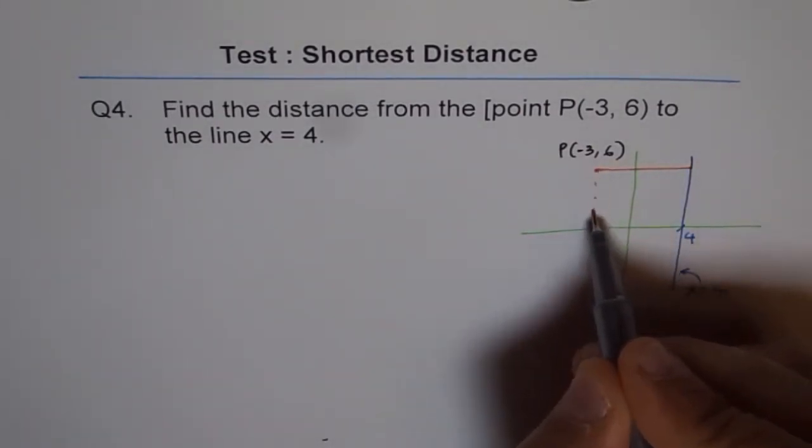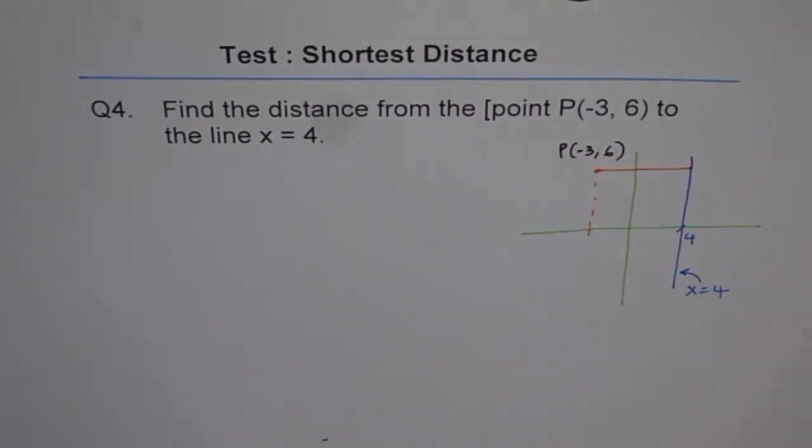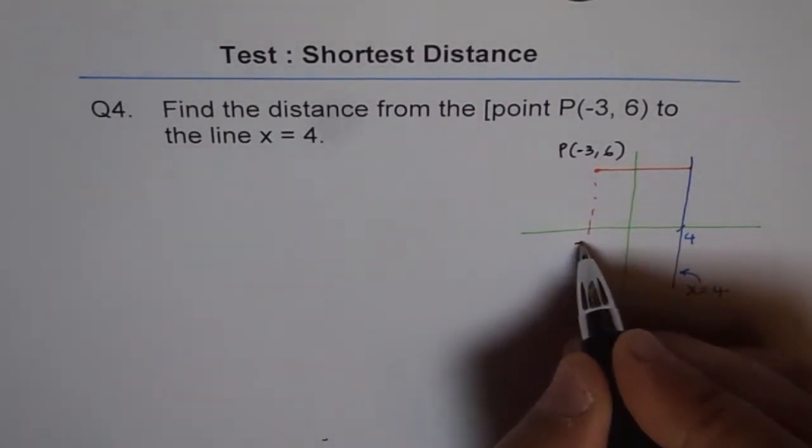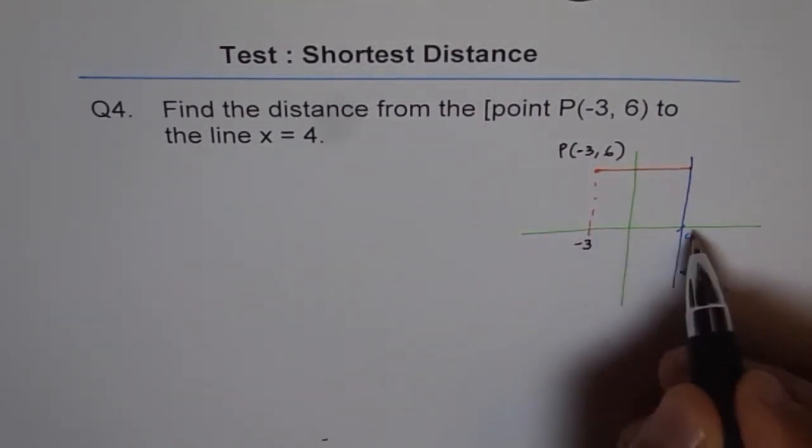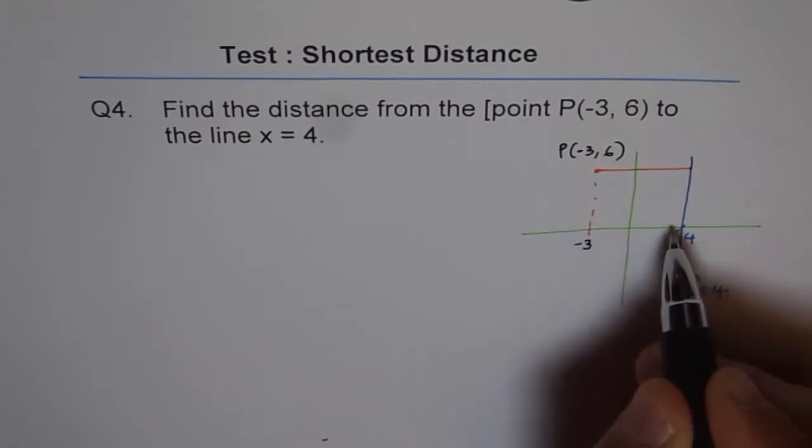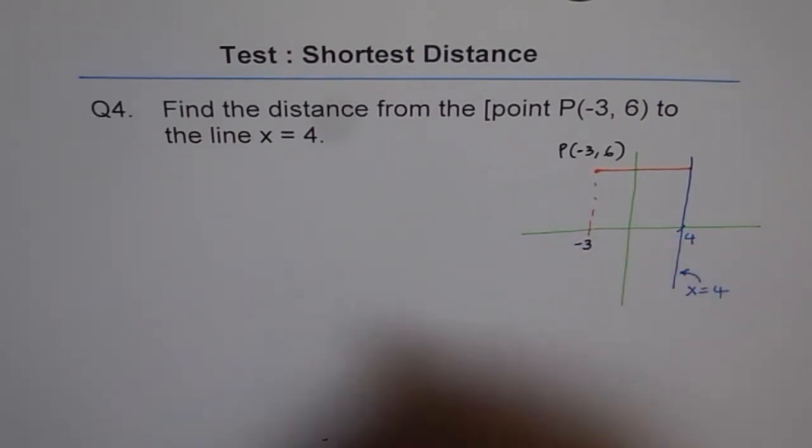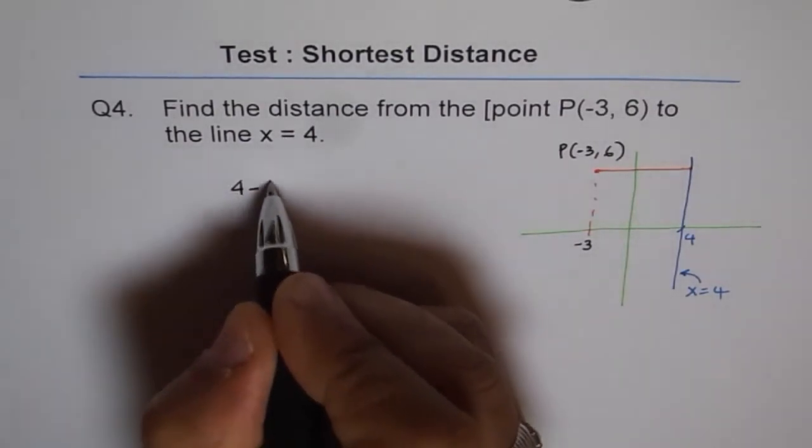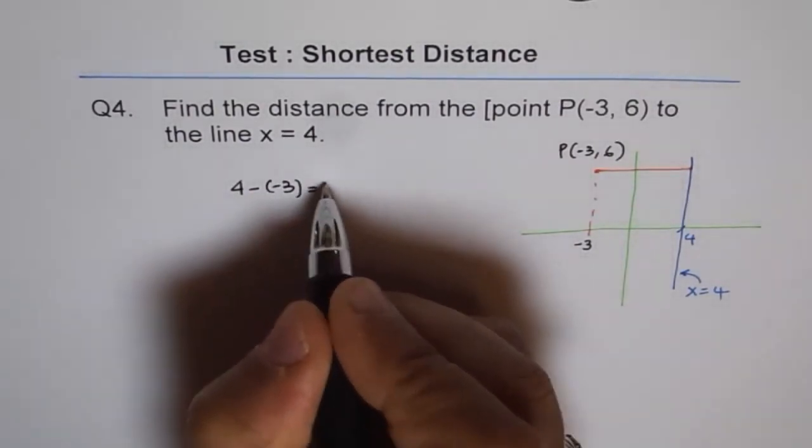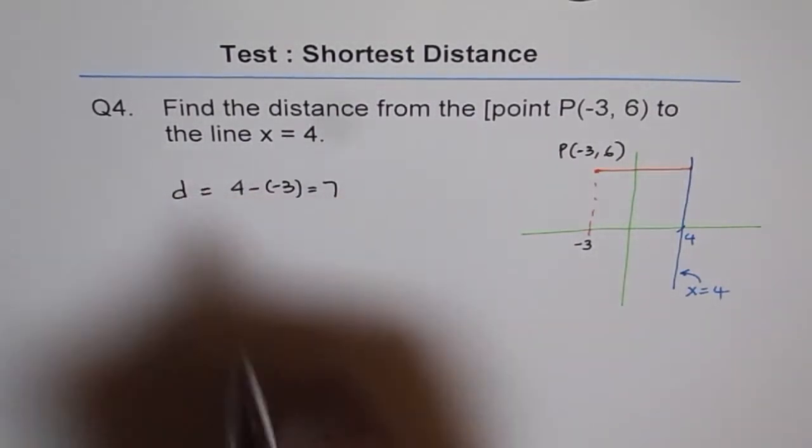So this point is minus 3 for us. So the distance is the difference in their x values. Do you see that? And the difference in their x values is 4 minus minus 3, which is 7. So that is the shortest distance.